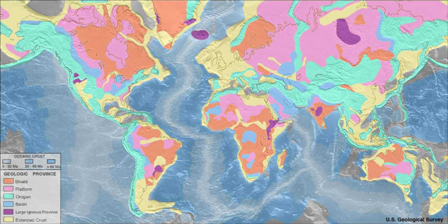Primary crust, also called primordial crust, is a planet's original crust. It forms from solidification of a magma ocean. Toward the end of planetary accretion, the terrestrial planets likely had surfaces that were magma oceans. As these cooled, they solidified into crust.